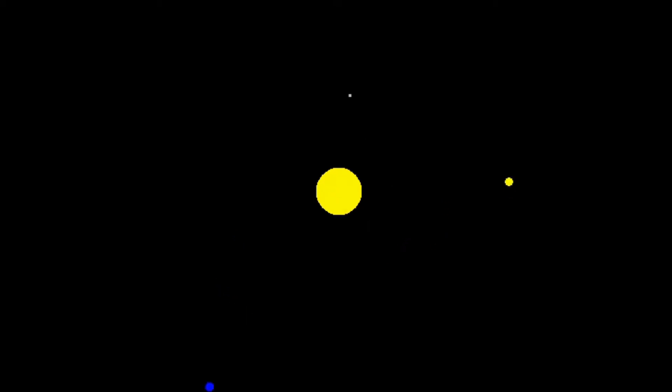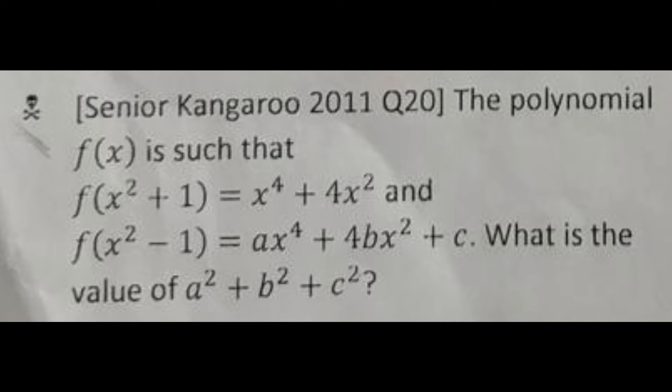One of my students brought this question to my attention: Senior Kangaroo 2011 Q20. The polynomial f(x) is such that f(x² + 1) = x⁴ + 4x².